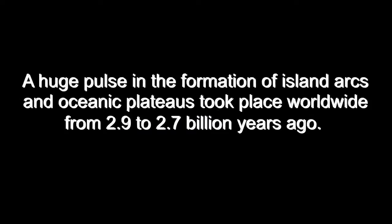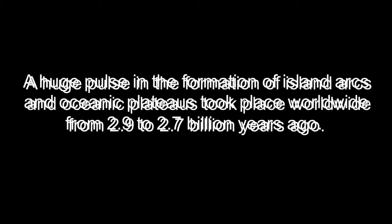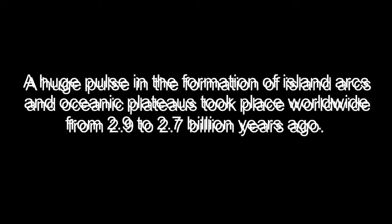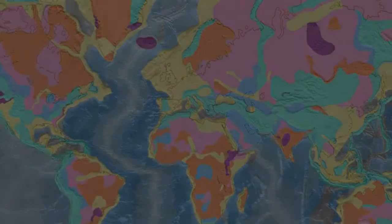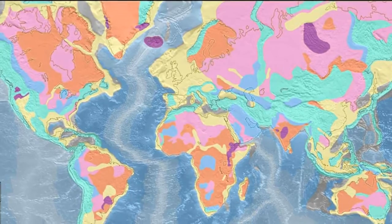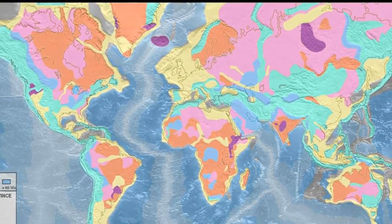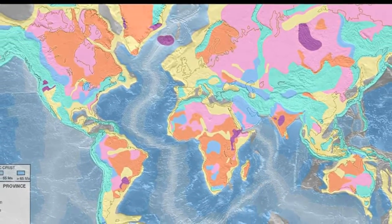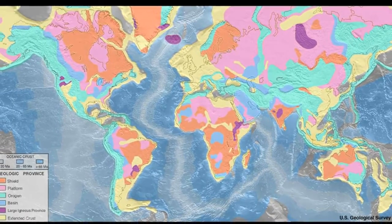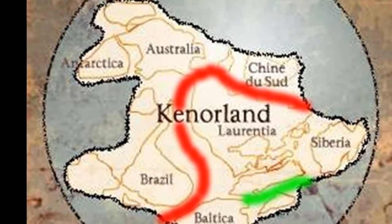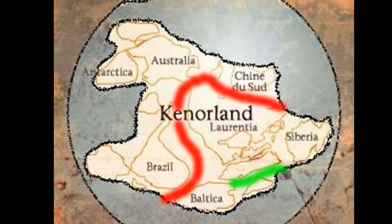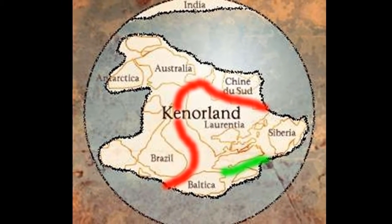A huge pulse in the formation of island arcs and oceanic plateaus took place worldwide from 2.9 to 2.7 billion years ago. By the time of the Archean-Proterozoic Boundary, about 2.5 billion years ago, many small cratons — stable interior portions of continents dominated by island arcs — had coalesced into one large supercontinent that some scholars refer to as Kenorland.